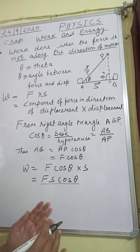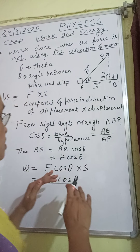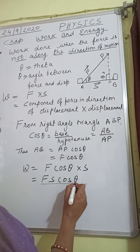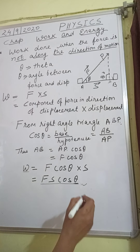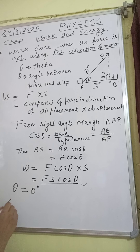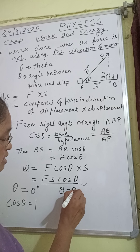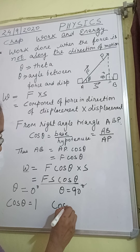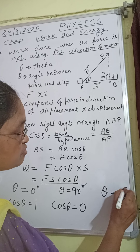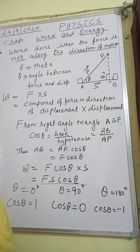This cos theta comes from trigonometry — when you reach standard 10, you will study trigonometry in detail. But in standard 9, remember the formula: cos theta equals base by hypotenuse, and we have used it here. Now, what happens if we change the value of theta? If theta is 0 degrees, cos theta equals 1. If theta is 90 degrees, cos theta equals 0. And if theta is 180 degrees, cos theta equals minus 1. Up to this we will do the rest in the next class.